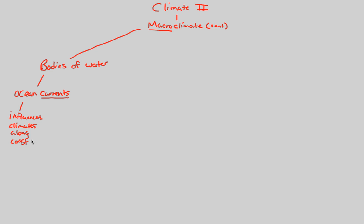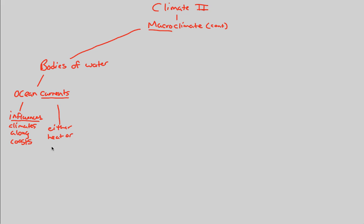We know what beach weather feels like — combining water and land creates a beach-like atmosphere that feels different from inland climates. This is because of ocean currents having this influence on nearby land. Furthermore, ocean currents either heat or cool the air masses above them. We know that air masses and air circulation patterns are of great interest when studying macroclimates. When currents heat or cool those air masses, those air masses inevitably pass over land, and we experience weather based on these ocean currents.